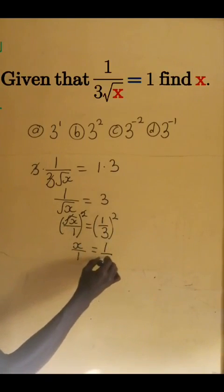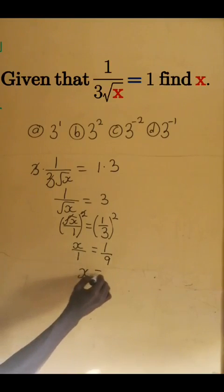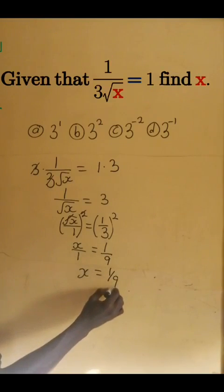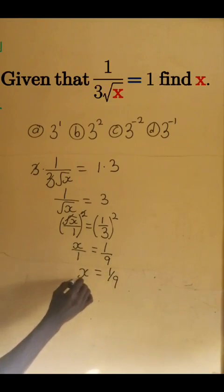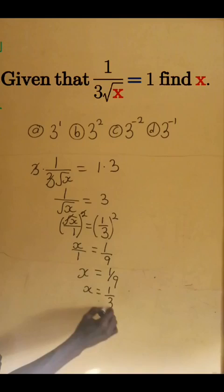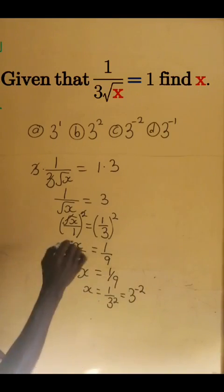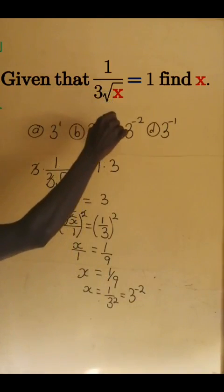So here x divided by 1 is x, so x equals 1 over 9. Now we have 9 to be 3 power 2, so we have 1 divided by 3 power 2, and this gives us 3 to the power negative 2. So the answer is C.